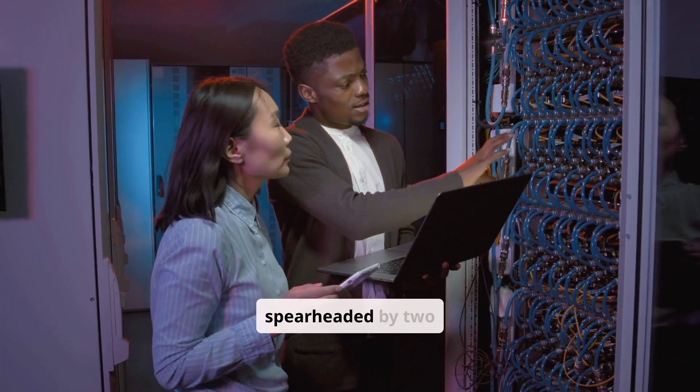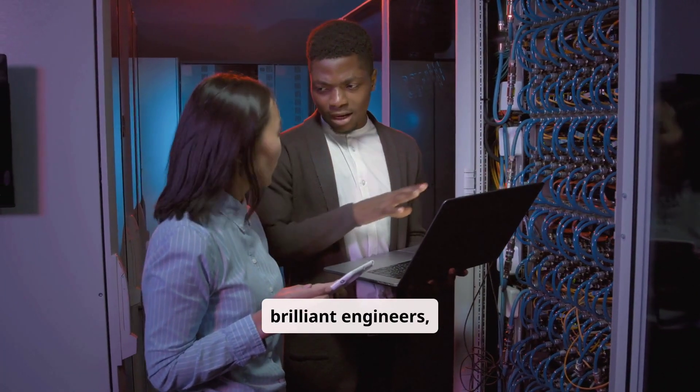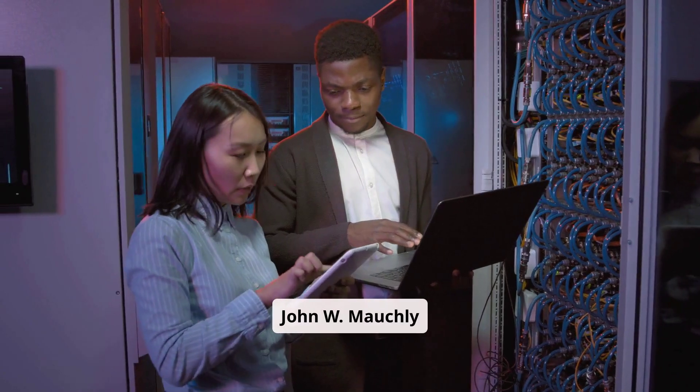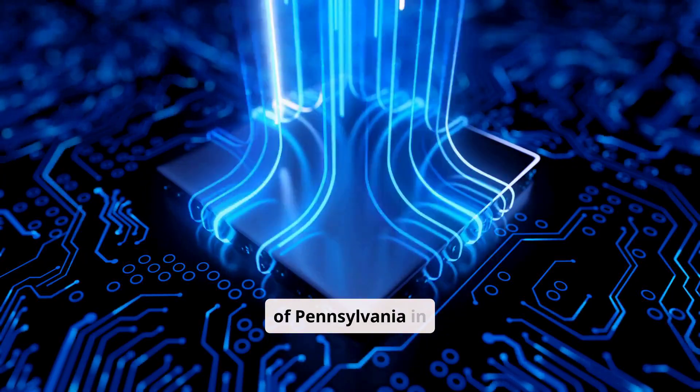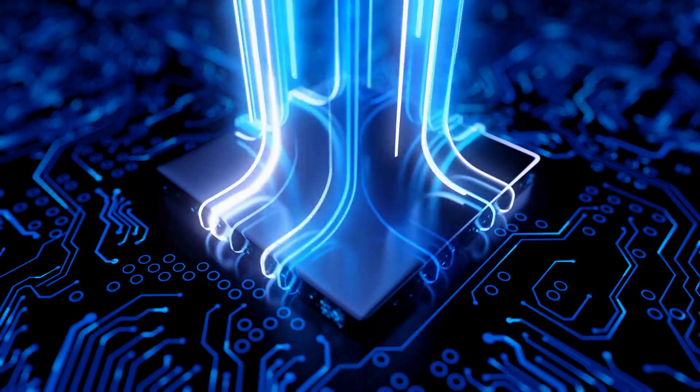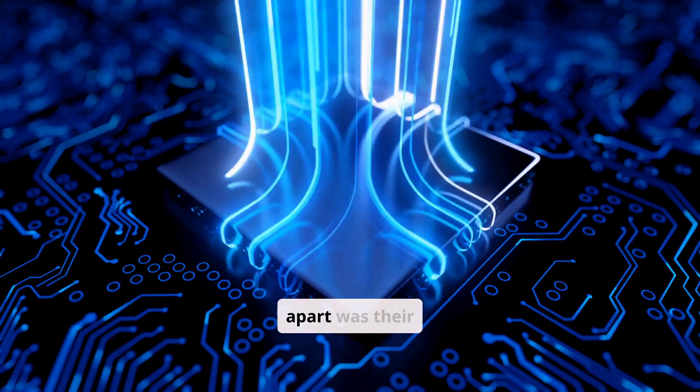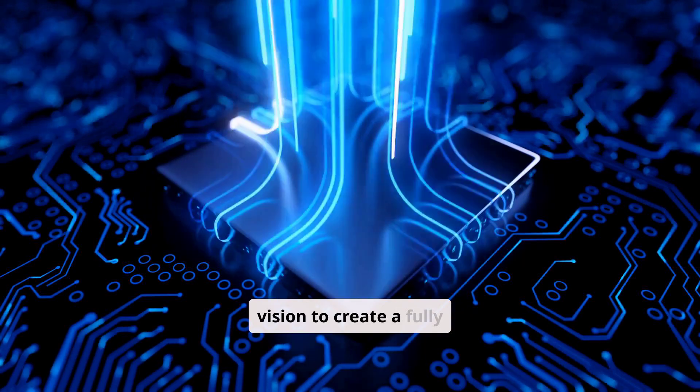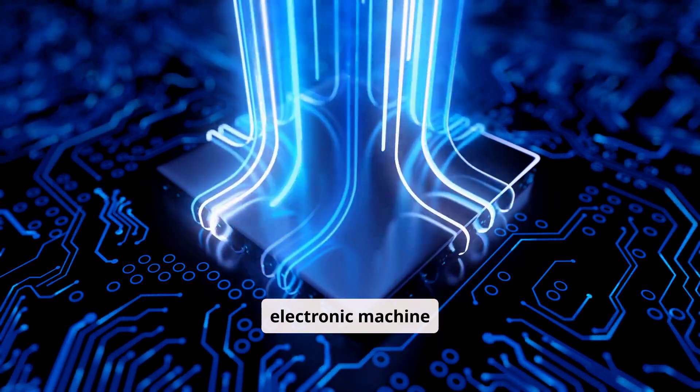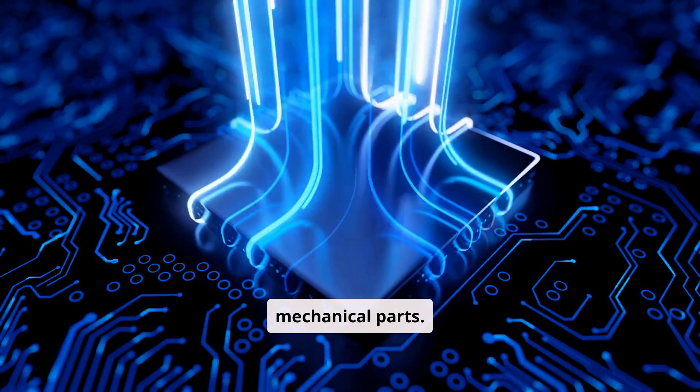The ENIAC project was spearheaded by two brilliant engineers, John W. Mauchley and J. Presper Eckert, Jr. at the University of Pennsylvania in 1943. What set their work apart was their vision to create a fully electronic machine, instead of relying on mechanical parts.